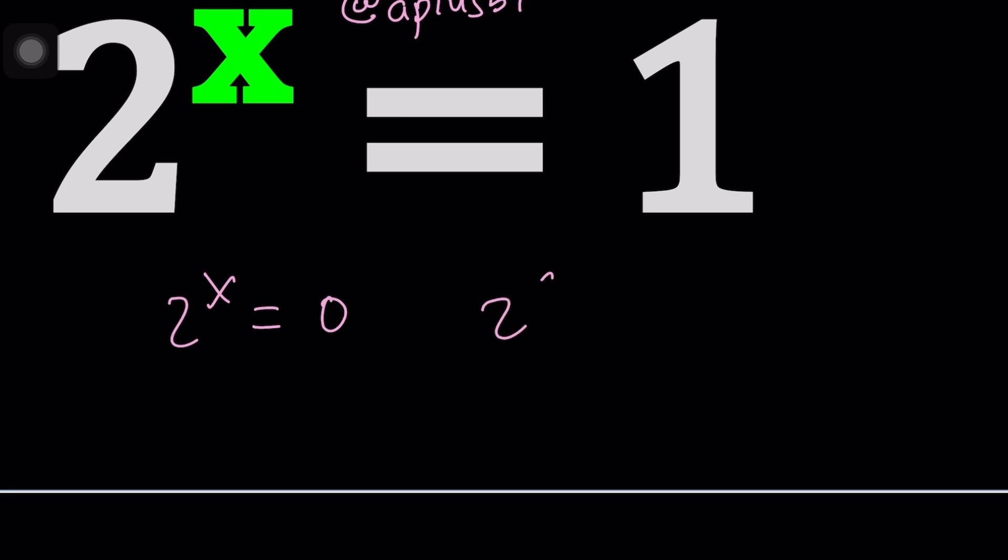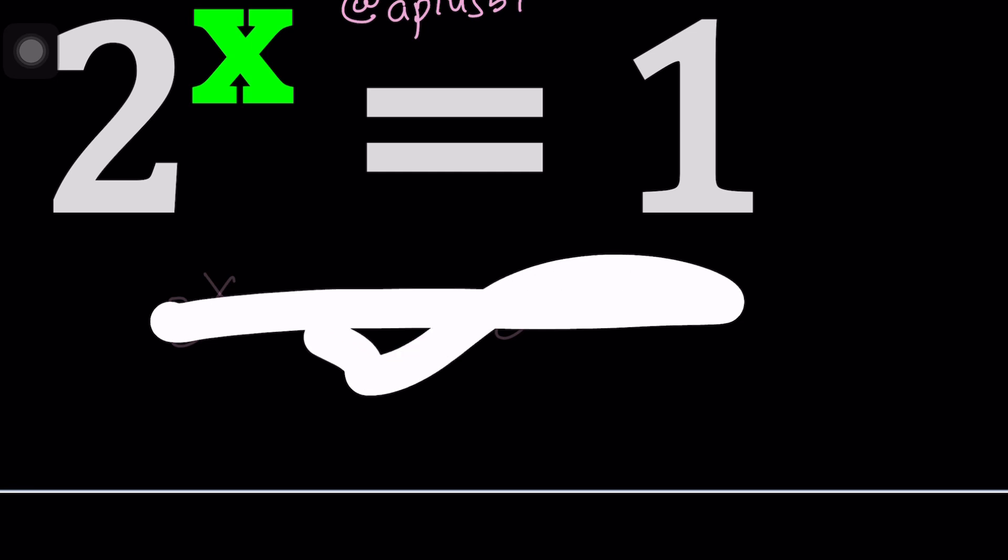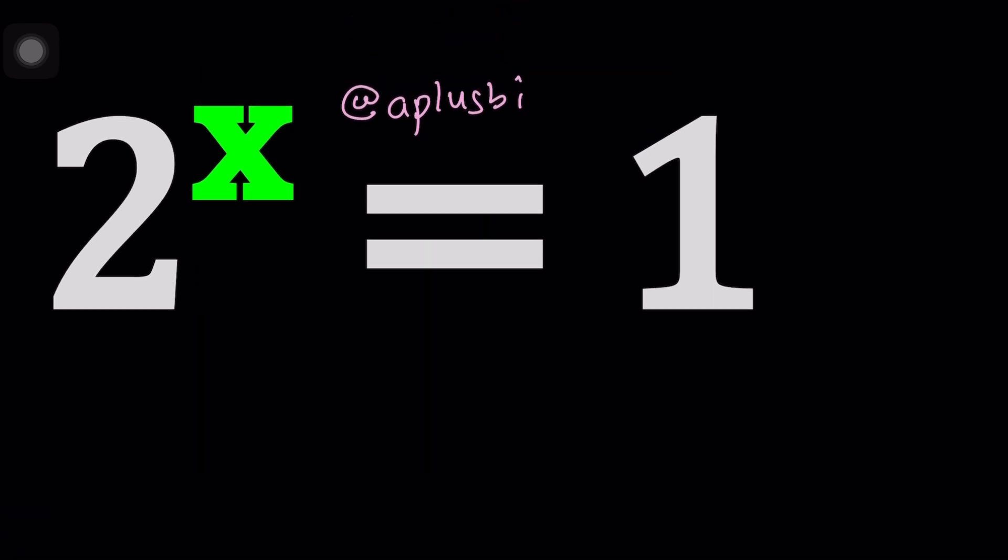But if I told you 2 to power x equals negative 1 you would know that this equation has no real solutions. 2 to x cannot be negative. But we are gonna be extending it to the world of complex numbers because that's gonna make it more interesting.